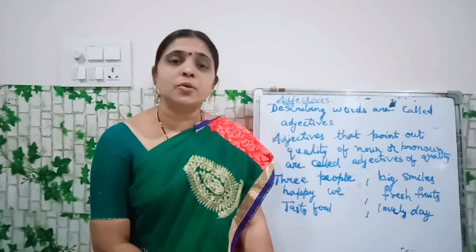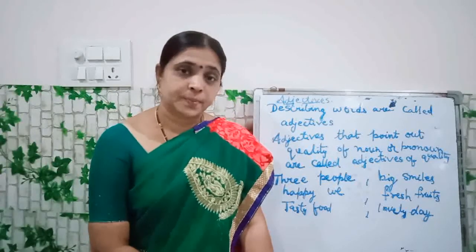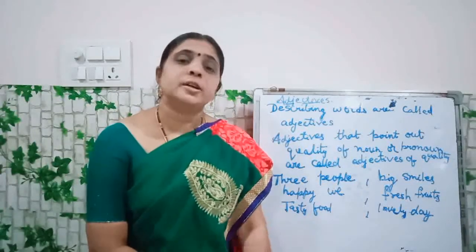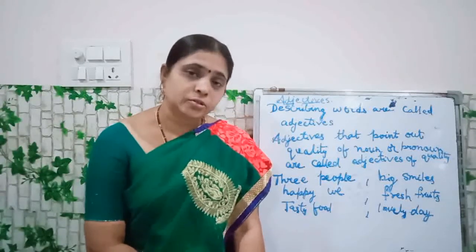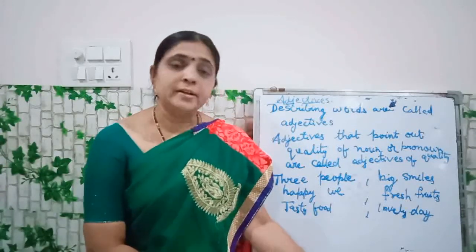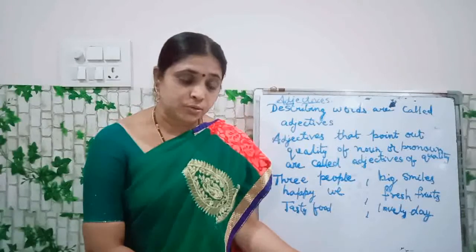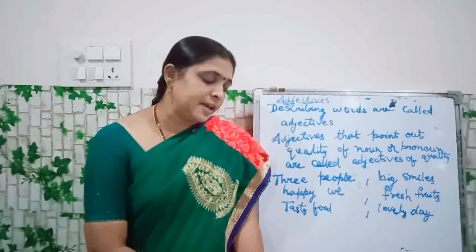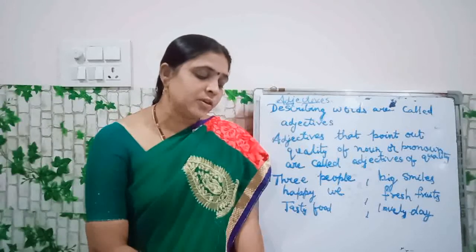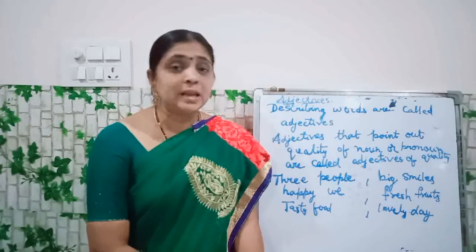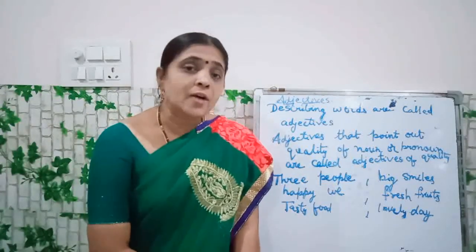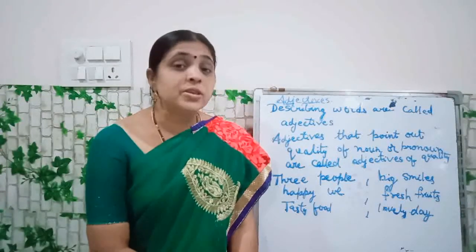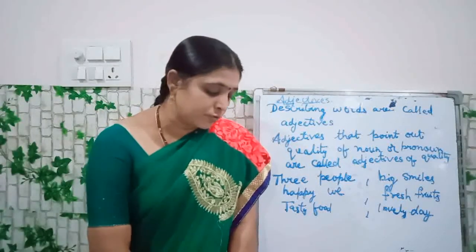Now all of you open your workbooks. Page number 42, children. Have you all got your books? In that, what you have to do? See Exercise 2.1: Find the names of these fruits and vegetables in the puzzle. A puzzle has been given. So in that puzzle, you have to search for these names of fruits.